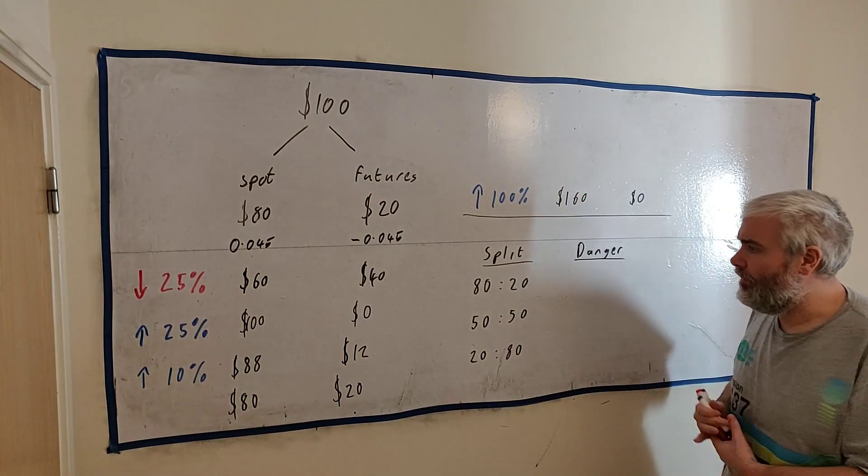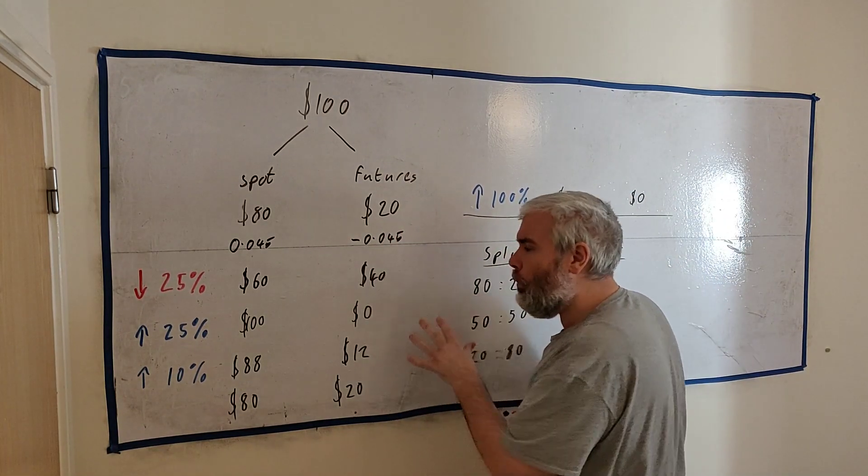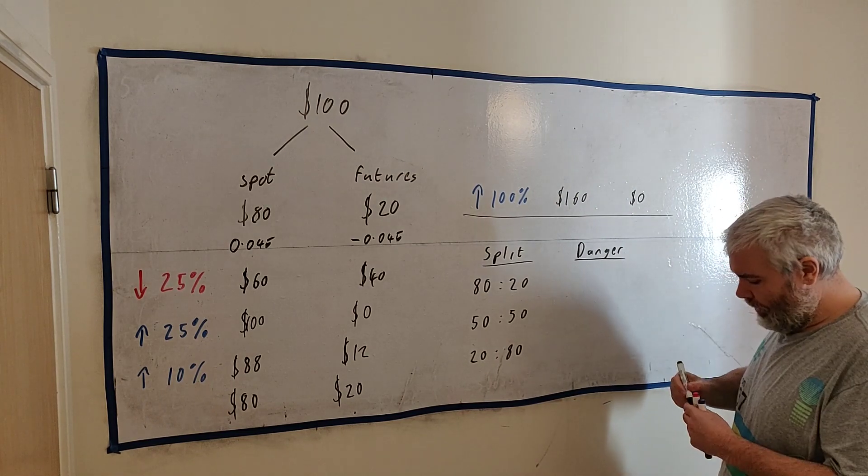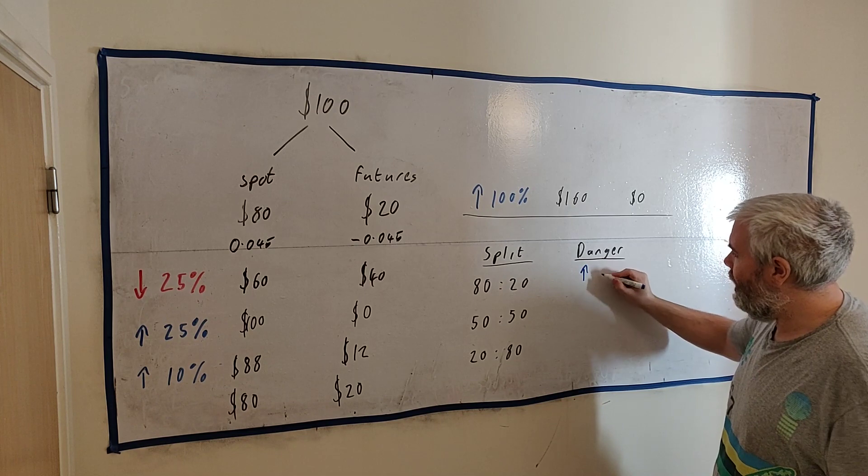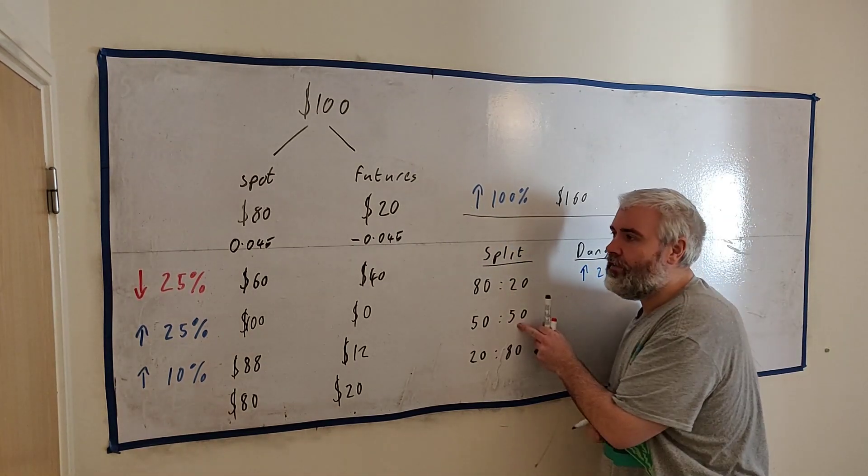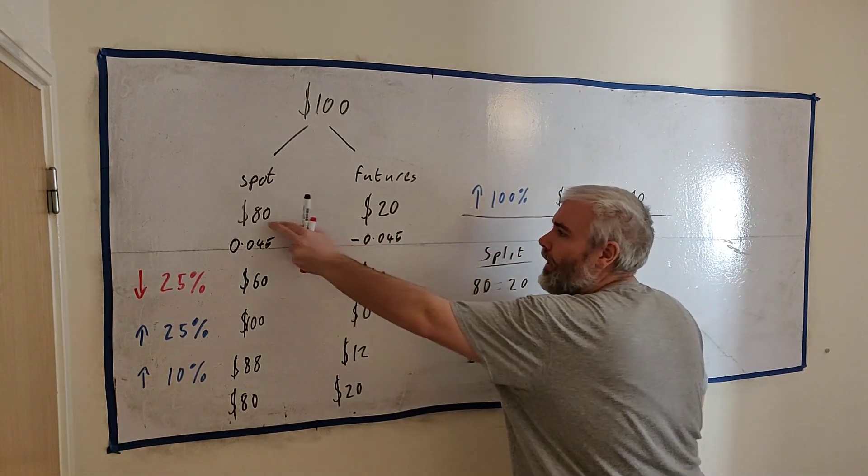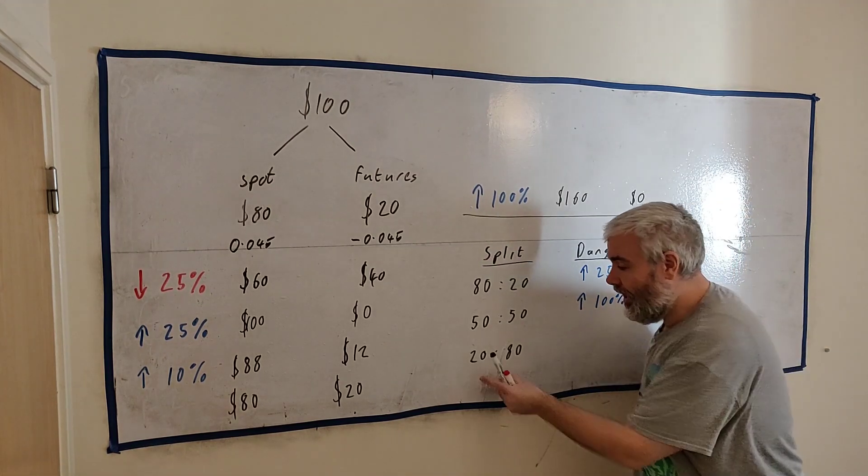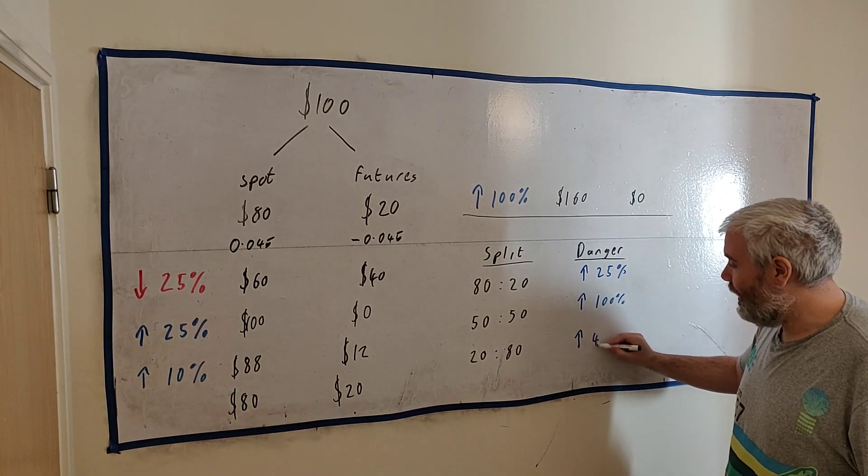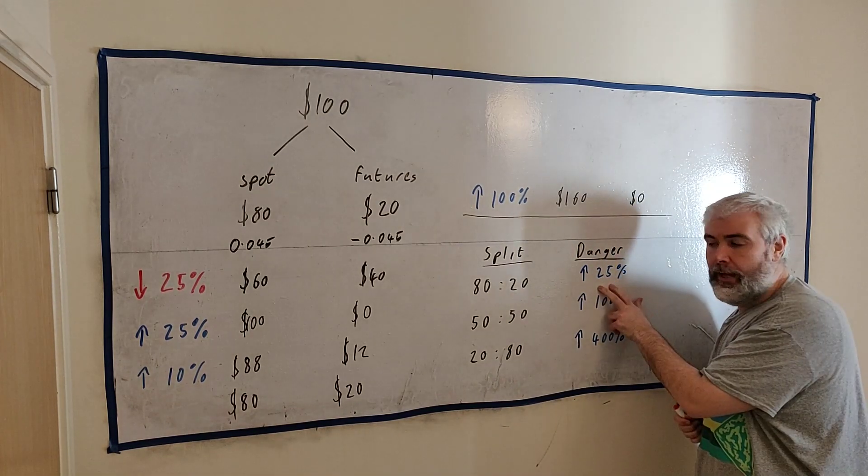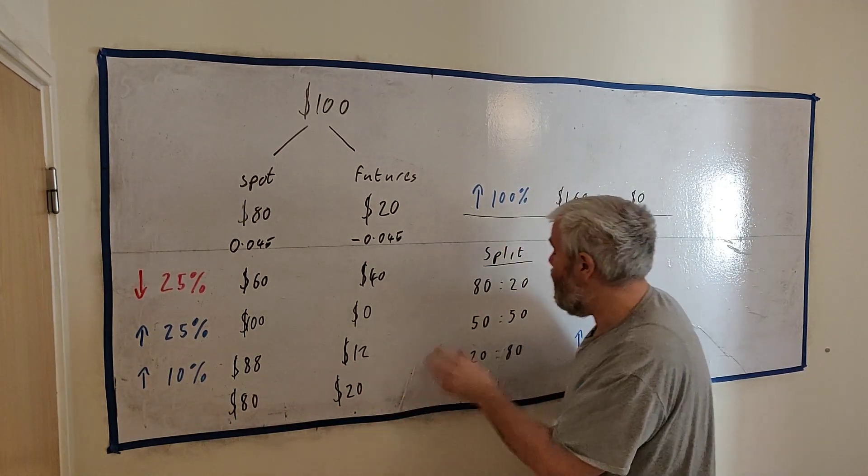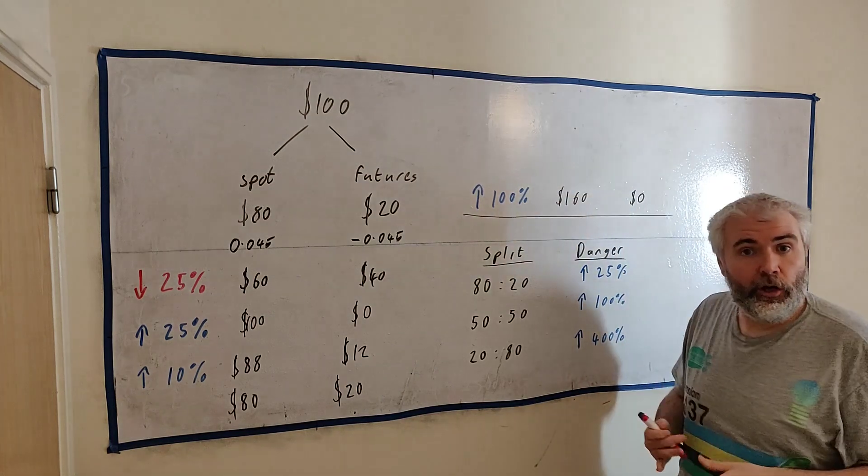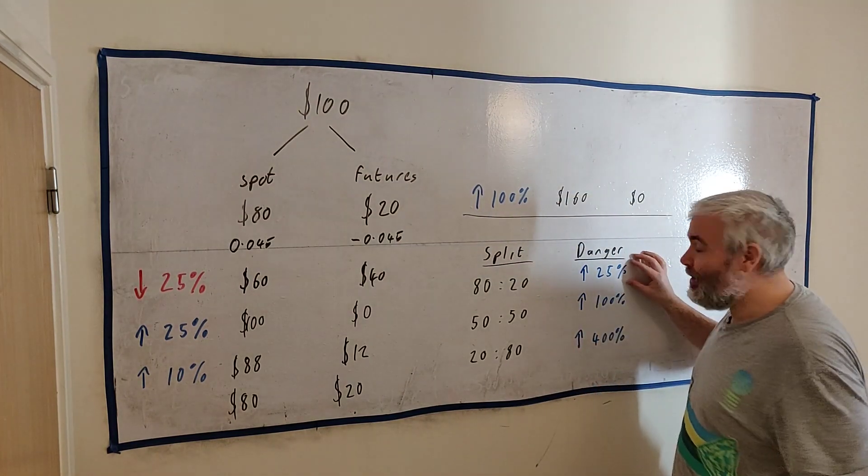Now let me talk a little about the split. I chose an 80-20 split. That was purely my choice. I'd like to show you what would happen if you picked some different splits. So on the 80-20 split, we found we were in danger when the market went up 25%. On a 50-50 split, you can do out the numbers yourself, think it through, but if you had $50 here and $50 here, you would only be in danger once the market went up 100%. And if you were safer again at 20-80 split, you would only become in danger if the market went up 400%.